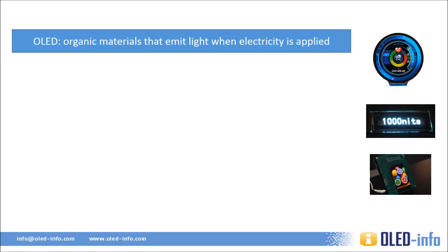An OLED, or organic light-emitting diode, is made from organic carbon-based materials that emit light when electricity is applied. OLEDs can be used to make both displays and white OLED lighting panels. In OLED displays, each pixel is made from small red, green, and blue OLED sub-pixels, although some OLEDs use a white OLED emitter with color filters. An OLED lighting panel is like a large, single OLED pixel.